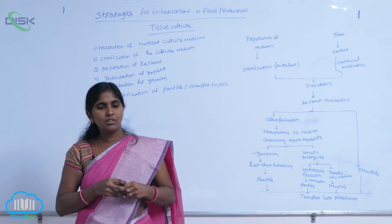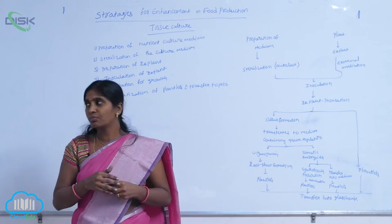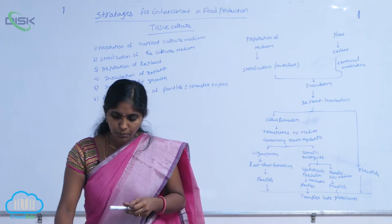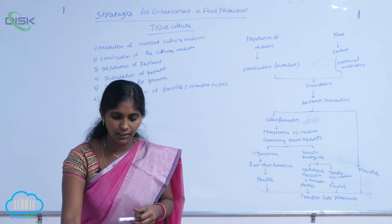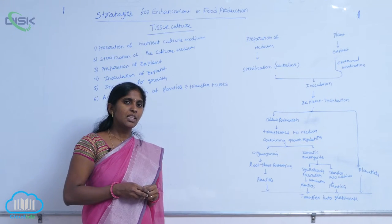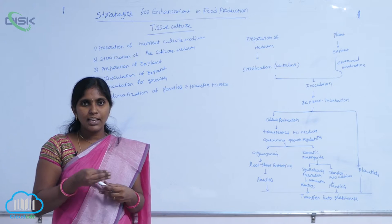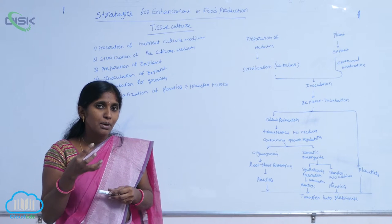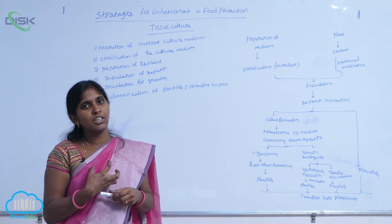After inoculation, it is allowed for incubation — allowed to grow. The step is incubation for growth. For incubation of growth, 3 to 4 periods of incubation time are needed. During this time, by using the nutrient media, the explant goes for continuous cell divisions. The explant can turn into a mass of cells, and the mass of cells is called callus.